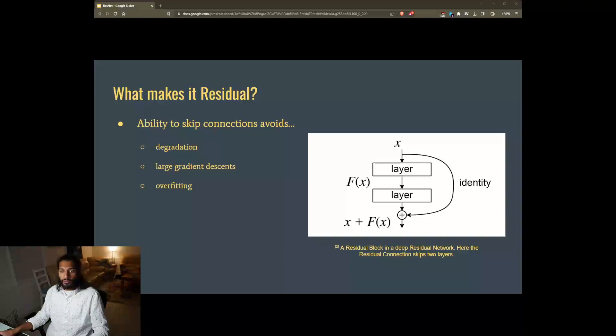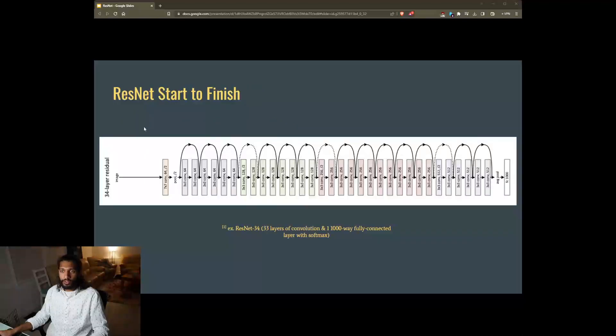The key benefit of ResNet is that it allows the creation of much deeper neural networks, for example 50, 101, or even 152 layers, that can still be effectively trained. Before ResNet, it was challenging to train such deep networks. ResNet skip connections make it possible to train deep networks without significant performance degradation.